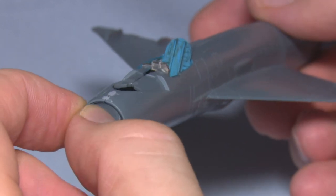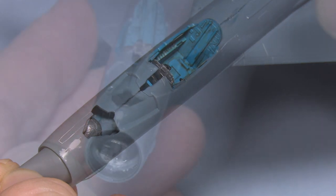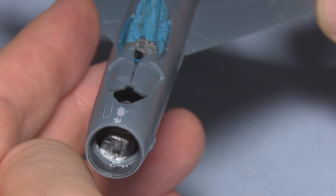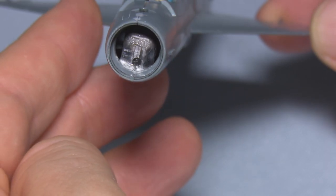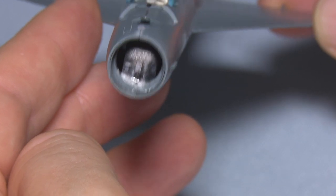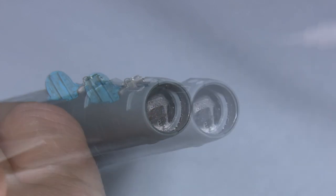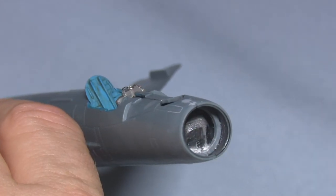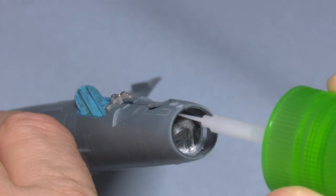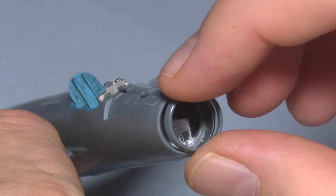One way to test whether you've got sufficient weight in the nose is to hold the aircraft roughly where the wheel legs will be, hold it with just a few fingers and then balance it to see if it will tip forward or backward. In other words to find the center of gravity. But to be safe, always add a little bit more just to make sure.